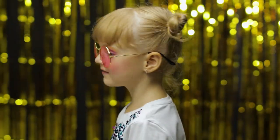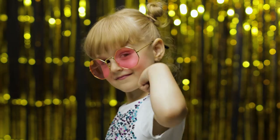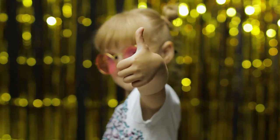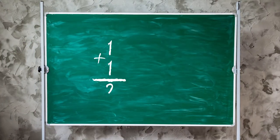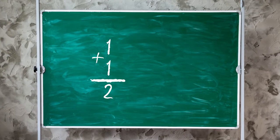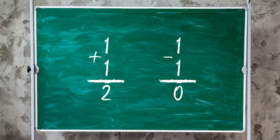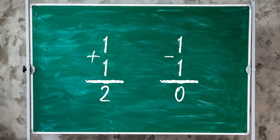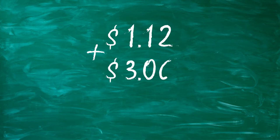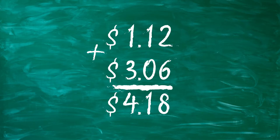You're probably familiar with an addition or subtraction problem. One plus one equals two. One minus one equals zero. But have you ever seen a math problem using money before? They look like this. One dollar and twelve cents plus three dollars and six cents equals four dollars and eighteen cents.